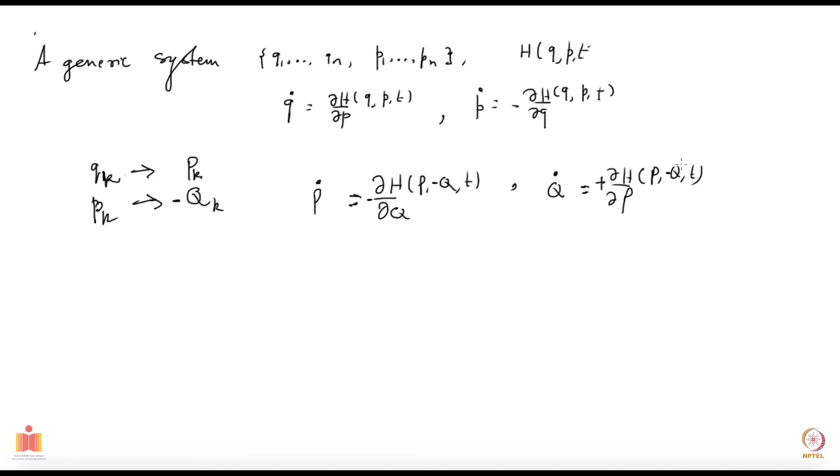You see what I have done is I have gone from Q, P to a new set of variables where I have labelled the coordinates as momenta, and still the equations of motion hold true in the canonical form. This emphasizes our point that I can treat them all at equal footing instead of distinguishing them as coordinates and conjugate momenta. That is why these are more simply just called canonical coordinates.